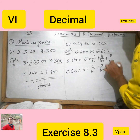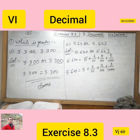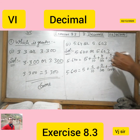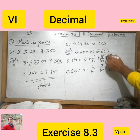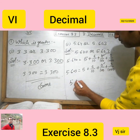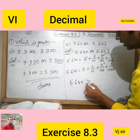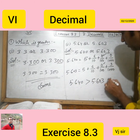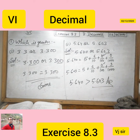Now you see which one is greater on the hundredths place: 4 or 0. Since 4 is greater than 0, we can say that 5.640 is greater than 5.603. It is very simple.